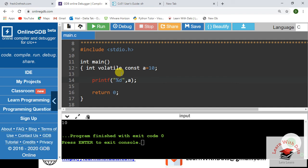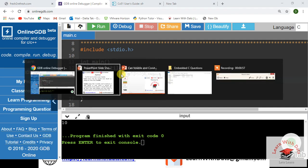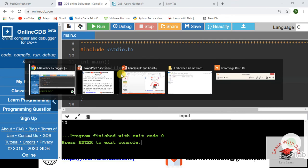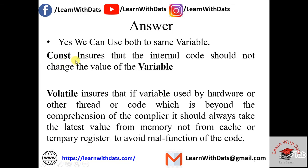So const ensures that the internal code — that is, the main function — should not change the value of the variable. If we have an application where we need to not change the value of a variable, then const is used. But when volatile comes into the picture, that changes things.